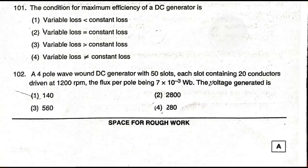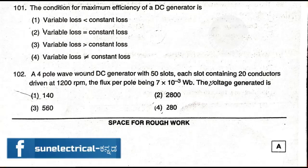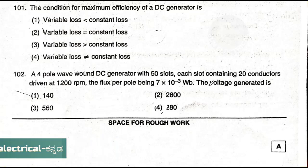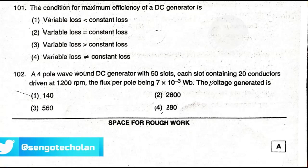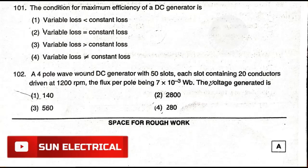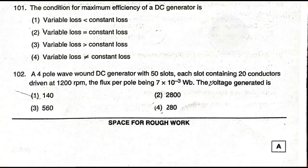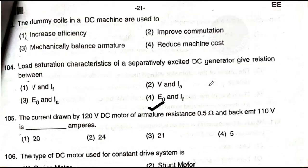Question number 102: A DC generator with each slot containing 20 conductors, 150 slots, driven at 1200 RPM. The voltage generated is — option one: 140; option two: 2800; option three: 560; option four: 280. The answer is option four — 280 volts.